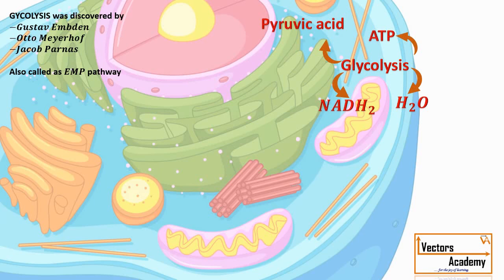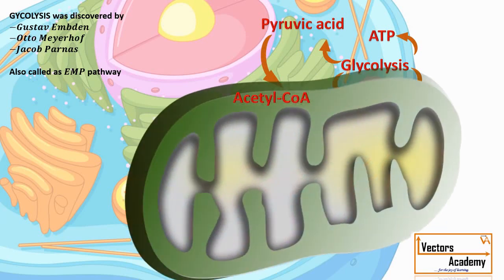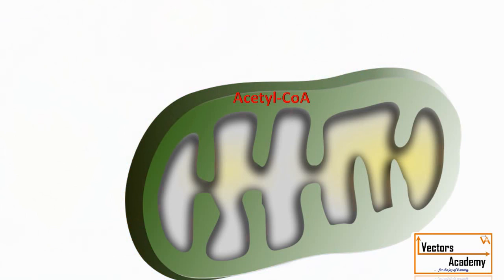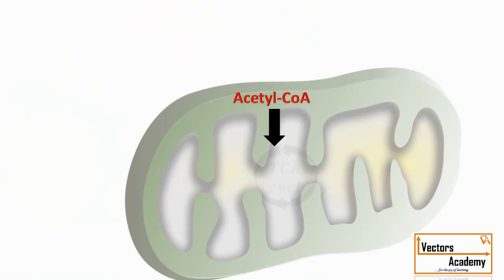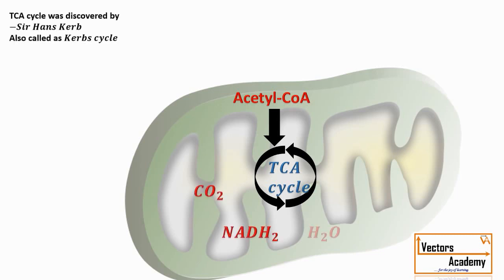Pyruvic acid so formed further gets broken down and converted into acetyl coenzyme A. The second step is the tricarboxylic acid cycle, or TCA cycle, also called the Krebs cycle after the scientist Krebs. This cycle takes place in the matrix of the mitochondria. Acetyl coenzyme A enters the matrix and is completely oxidized through a cyclical process, leading to the formation of carbon dioxide, water molecules, NADH2, and FADH2 as assimilatory power.